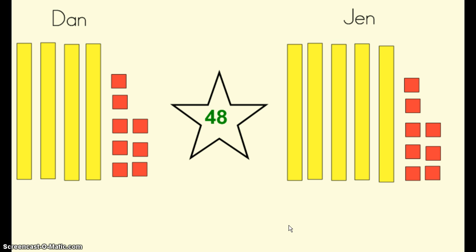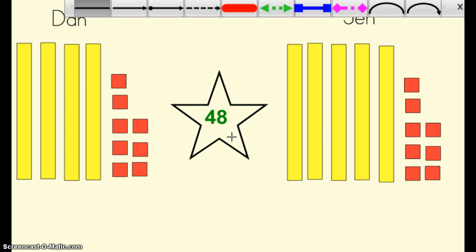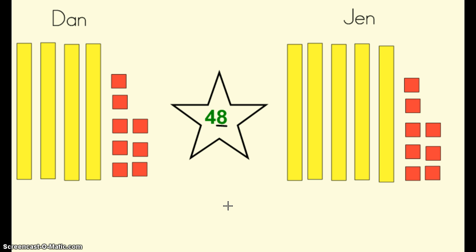Dan and Jen both have the ones place correct because they both have eight ones. They both do not have the tens place correct. Which student has the tens place correct?